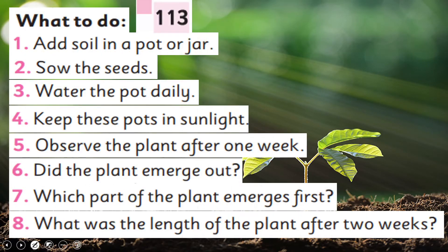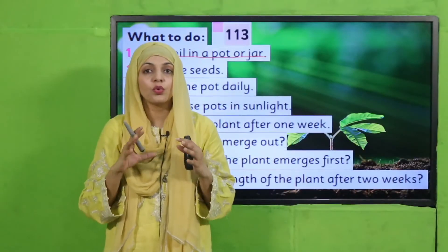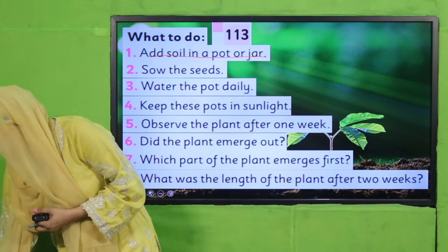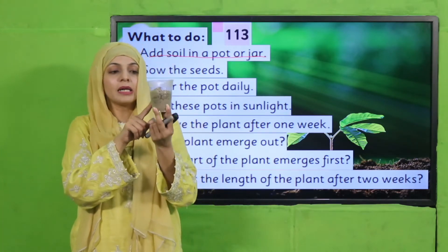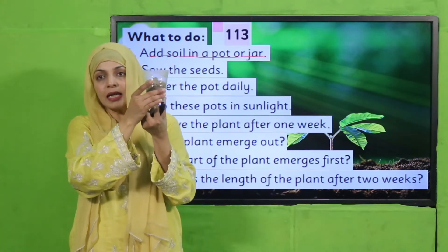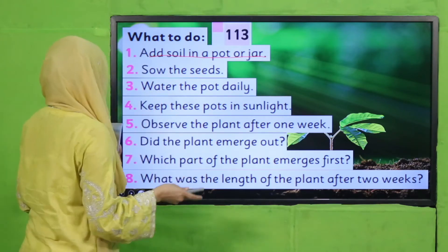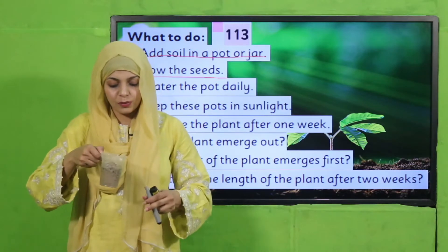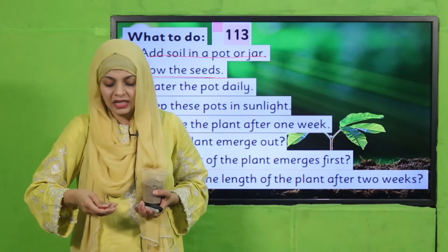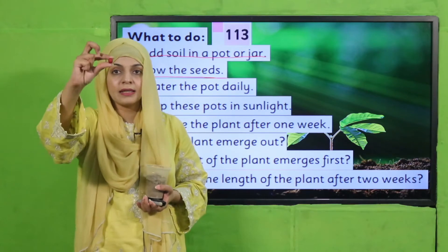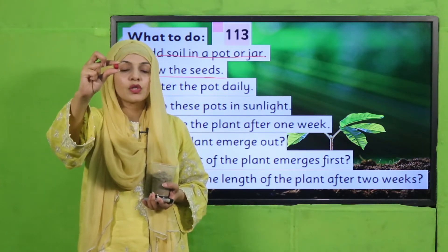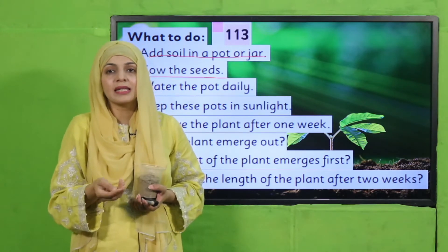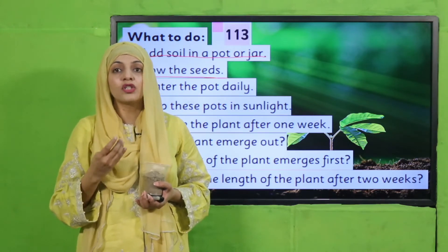First of all, add soil in the pot or jar. I will show you step by step. I took a jar and added soil to it. Now let's sow the seeds. Let me show you the bean seeds — these are the bean seeds. I have soaked them in water so they will quickly germinate.